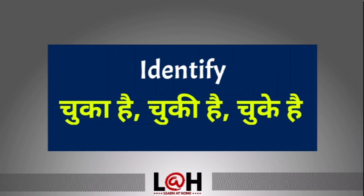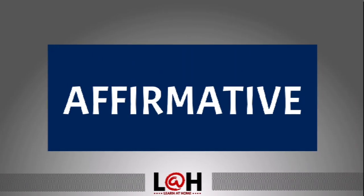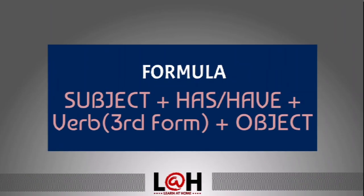For present perfect tense, the affirmative formula is: Subject + has/have + third form of verb + object. Basically, it is a completed past action where the third form is used. Has is used for singular subjects, and have is used for plural subjects. For 'you,' we always use 'have.'